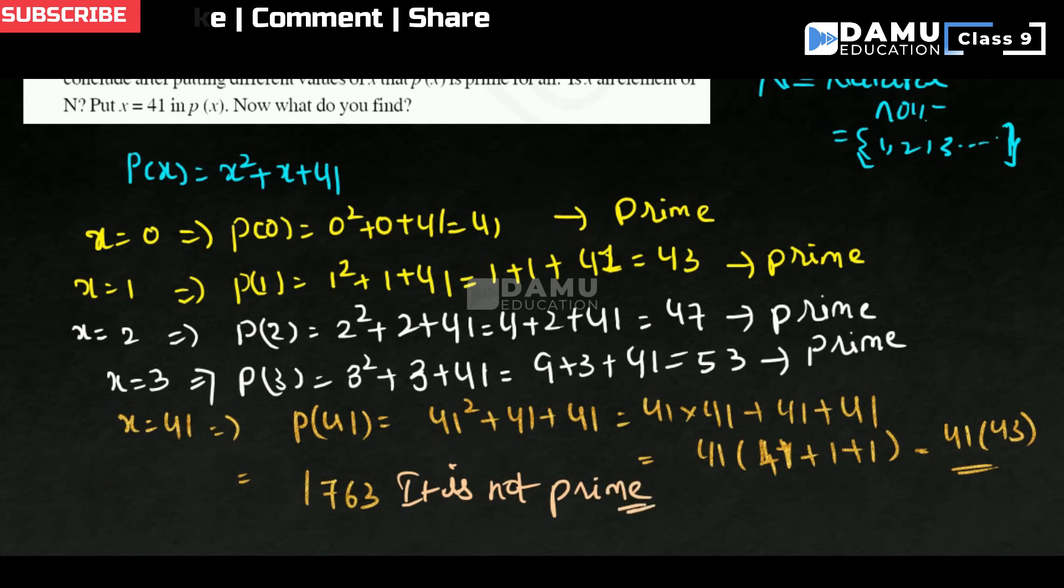It is not prime. Why? Because prime number is nothing but the number which is only divisible by the number 1 and itself. So this number can be divisible by either 41 or either 43.